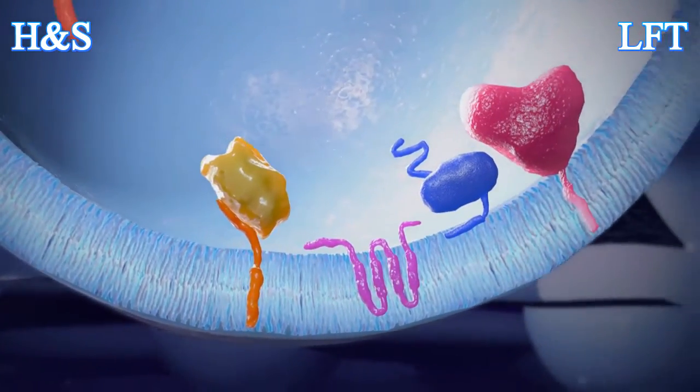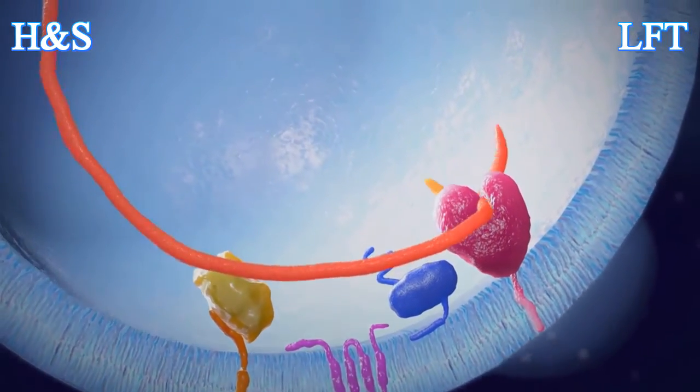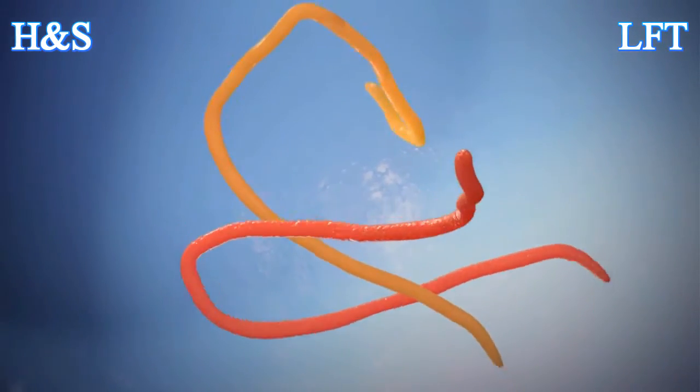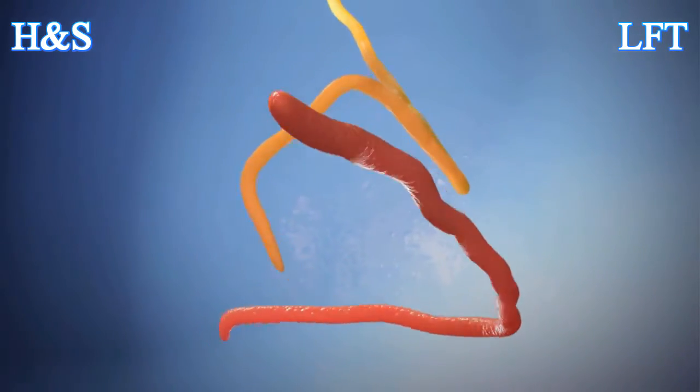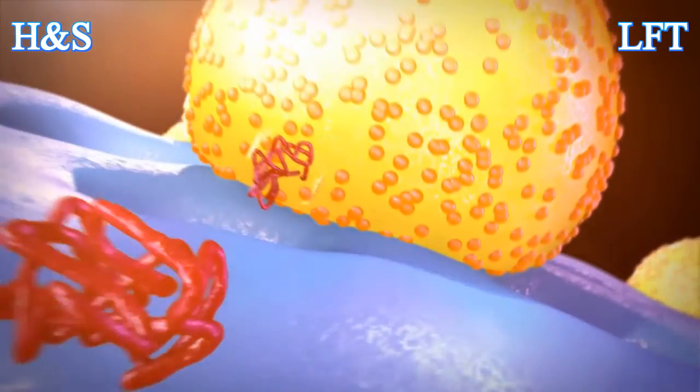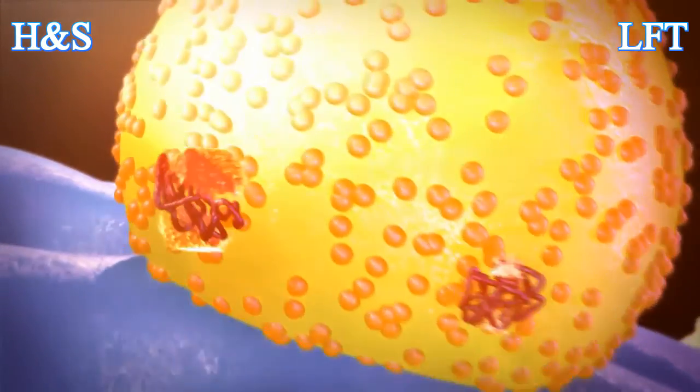During replication, a negative strand of RNA is produced from the positive-stranded RNA. The two strands then combine to form a double-stranded intermediate. This intermediate is like a photocopier, serving as the template for the production of thousands of copies of the viral genome.